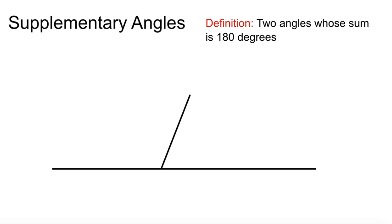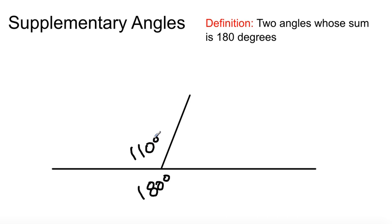Next: supplementary angles. Two angles whose sum is 180 degrees. So this is your straight angle again — that's 180. Let's just say this is 110 right here. What's left? 180 minus 110 is 70.